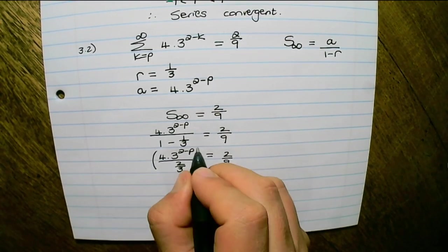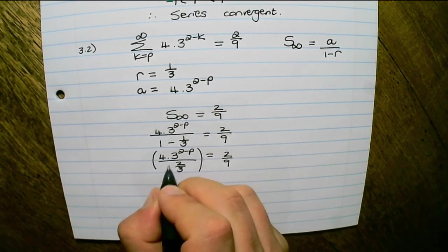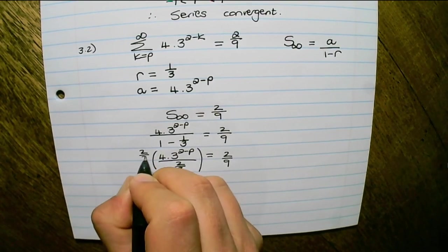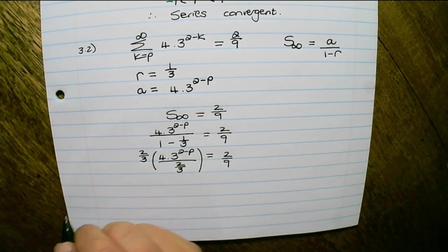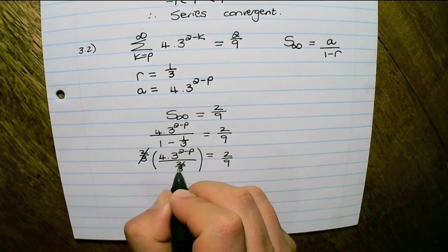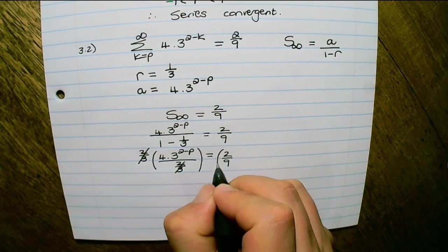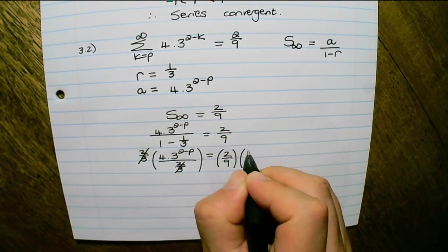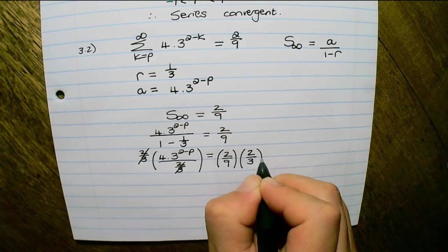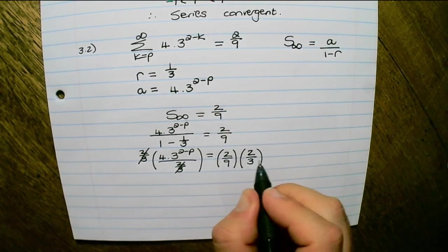And in order to remove the 2 thirds in the denominator, I multiply by 2 thirds. And you see, it will cancel out on the left. And what I do on the left, I would do on the right. So I also multiply by 2 thirds.